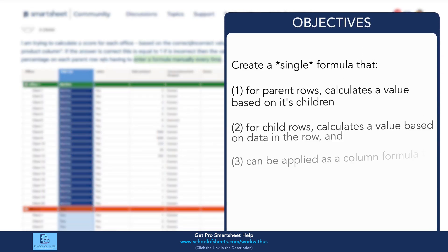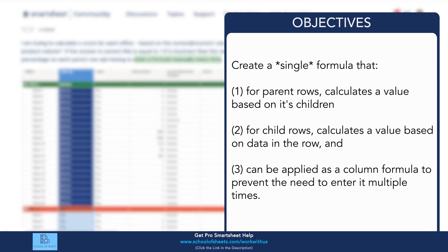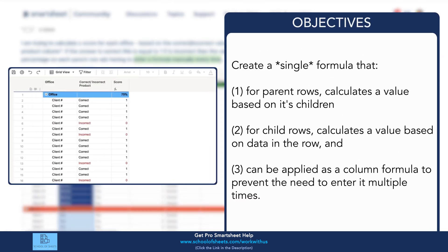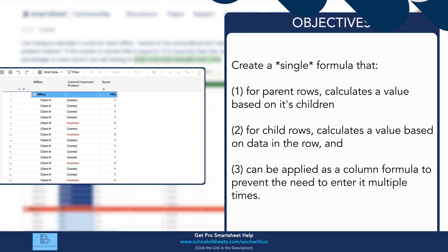The goal is to write a single formula that will adapt to parent versus child rows, either displaying the percentage total or the individual ones and zeros. This is very possible, so we're going to go ahead and do it.